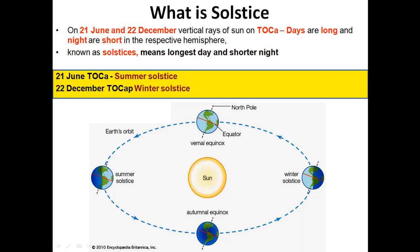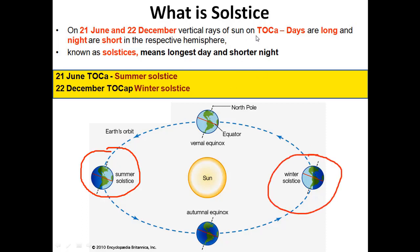Now we will understand what is solstice. On 21st June and 22nd December, vertical rays of the sun will fall on the tropics. Days are long and nights are short in the respective hemisphere. As you can see in this diagram, the direct rays are falling on the Tropic of Cancer. At this point, the days will be longer and the nights will be shorter. During winter solstice, direct rays will fall on the Tropic of Capricorn — in the southern hemisphere the days will be longer and nights will be shorter. It means the longest day and shortest night.